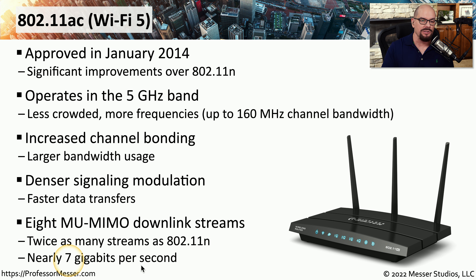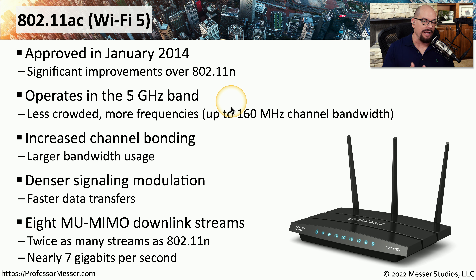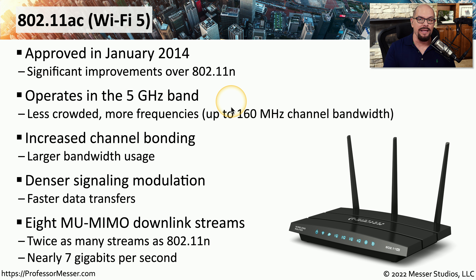802.11ac supports up to eight multi-user MIMO streams, which translates into a maximum total throughput of nearly 7 gigabits per second. Although 802.11ac operates only in the 5 gigahertz band, if you look at access points available to buy, some say they operate at both 5 gigahertz and 2.4 gigahertz. In those cases, the communication at 2.4 gigahertz is actually using the 802.11n standard, while anything at 5 gigahertz is using the AC standard.